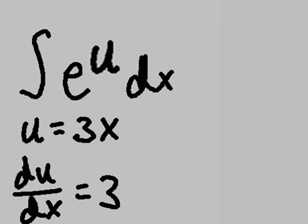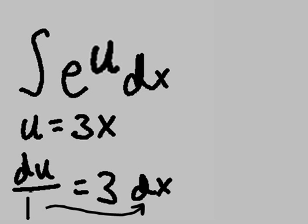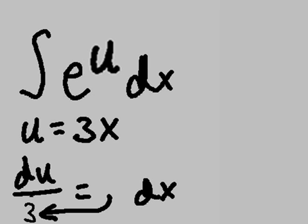du dx equals 3. A little bit of algebraic manipulation and we get du over 1 equals 3 dx. A little bit more algebraic manipulation and we get du over 3 equals dx.